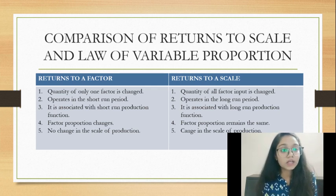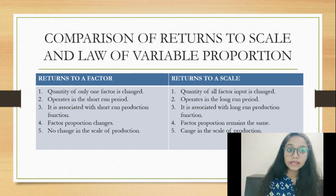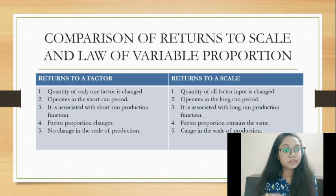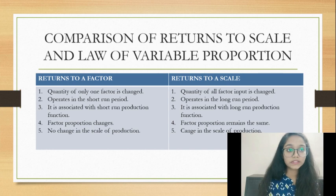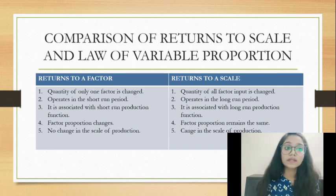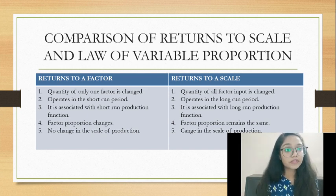In returns to a factor, one input is variable and all other inputs are fixed, while in returns to scale all inputs are variable. In returns to a factor there is no change in the scale of production, whereas in returns to scale there is a change in the scale of production. In returns to a factor there is a factor proportion change, and similarly in returns to scale there is also a factor proportion change.